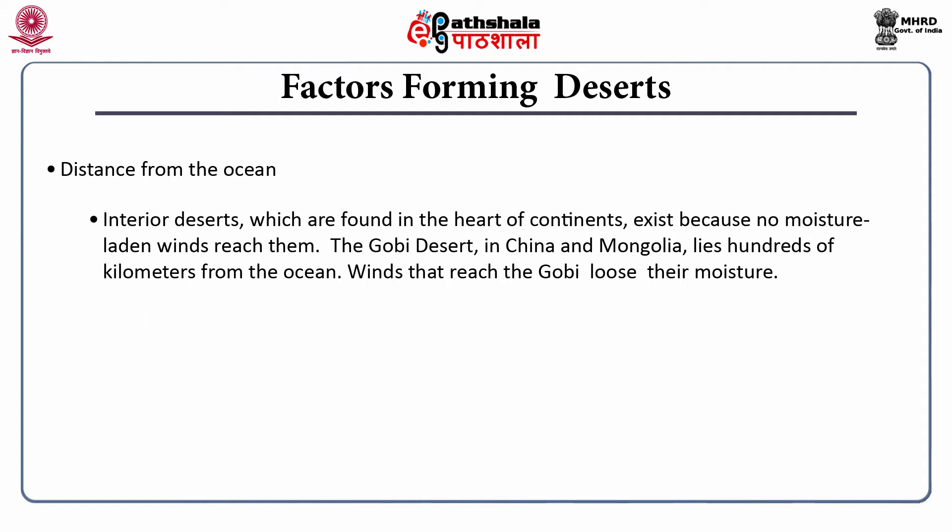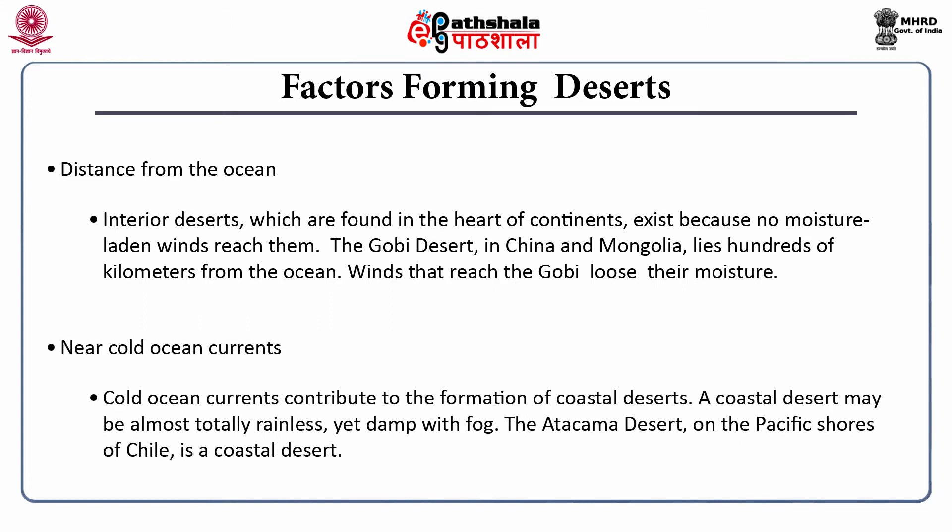The fourth factor is proximity to cold ocean currents. Cold ocean currents contribute to the formation of coastal deserts. A coastal desert may be almost totally rainless yet damped with fog. The Atacama Desert on the Pacific shores of Chile is an example of a coastal desert.